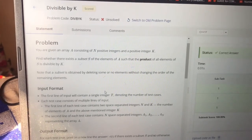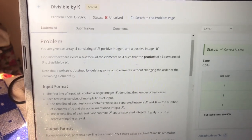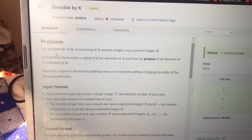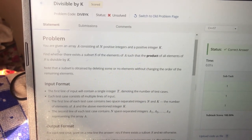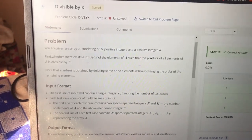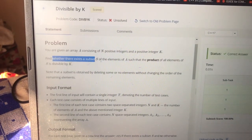Hello everyone, so today in this video we're going to be looking at this question Divisible by K, which is a simple long challenge. So what basically this question is saying: you are given an array A consisting of n positive integers and a positive integer k. It's asking to find whether there exists a subset S of elements of A such that the product of all elements of S is divisible by k.